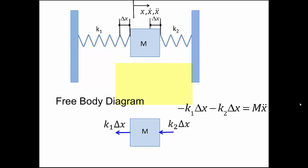Therefore, we have the equation negative k1 times delta x minus k2 times delta x equals to positive m times x double dot.